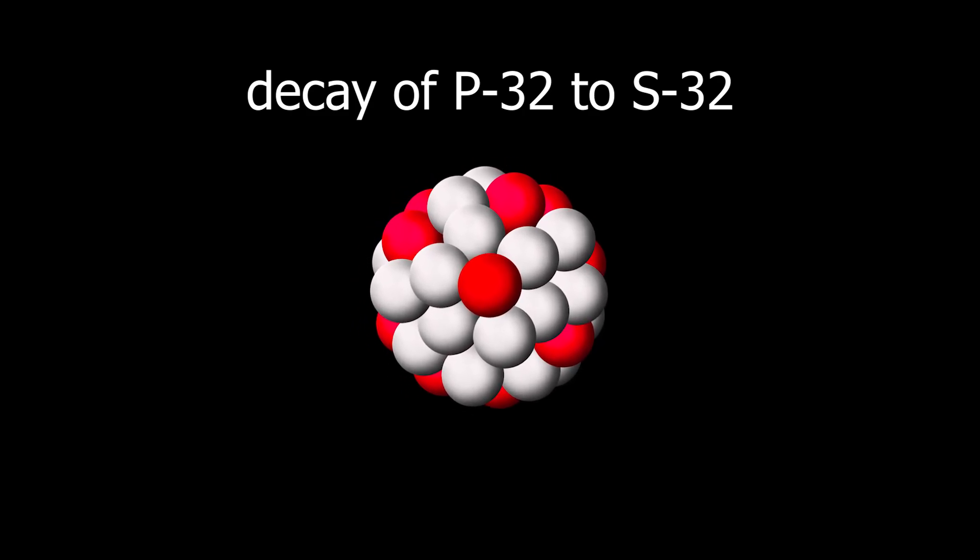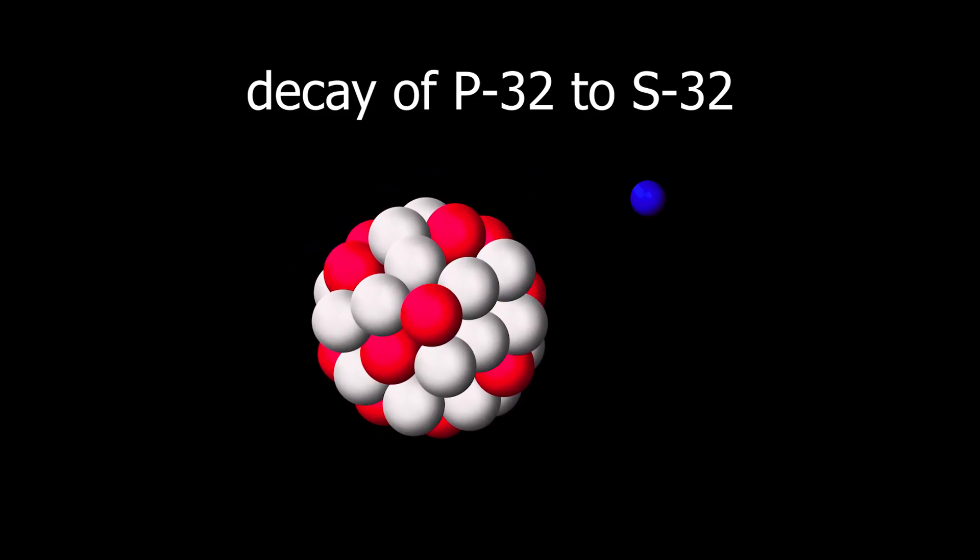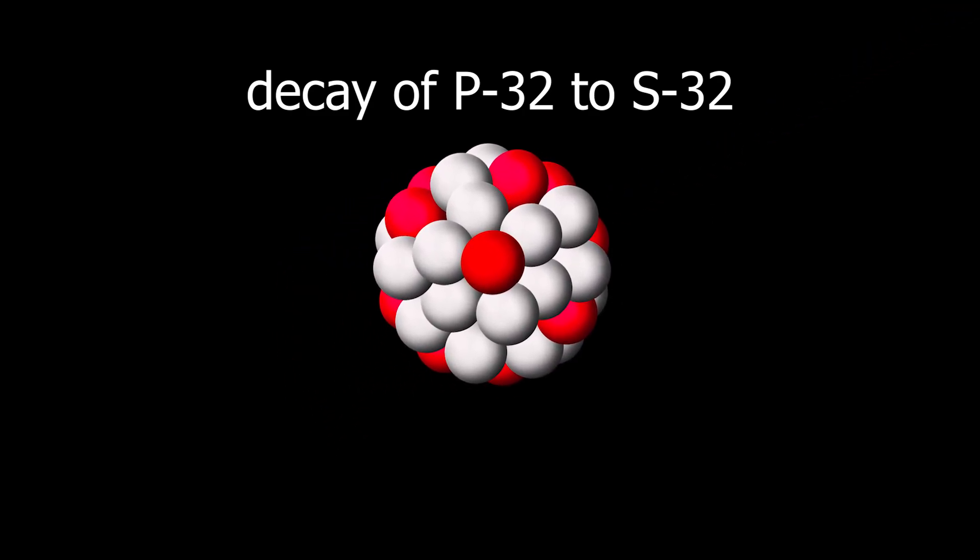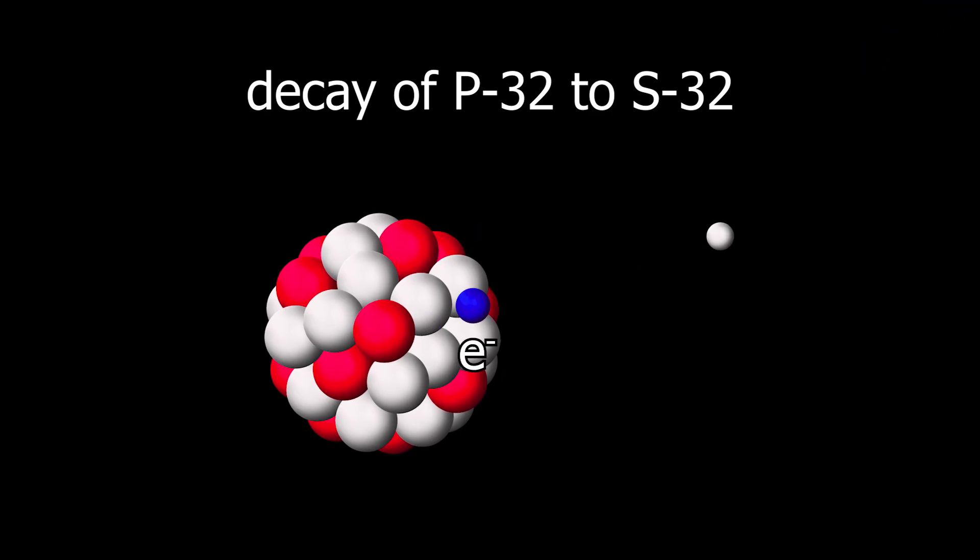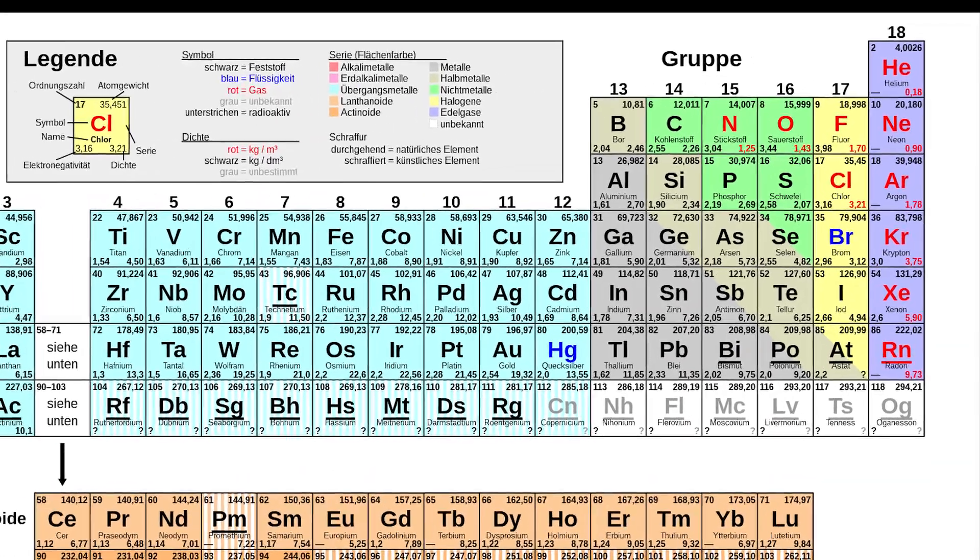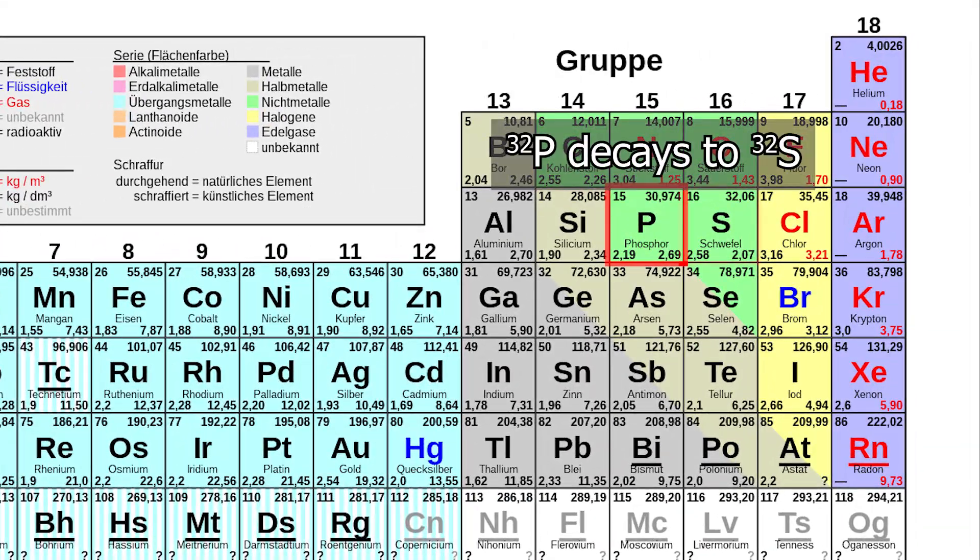During a beta minus decay, a neutron in the nucleus is transformed into a proton. Along with this, an electron and an anti-electron neutrino are emitted from the nucleus. The mass of the nuclide doesn't change as a neutron is converted into a proton, which for all practical purposes have nearly the same mass. However, the element changes because the proton number increases, shifting to the next element in the periodic table.